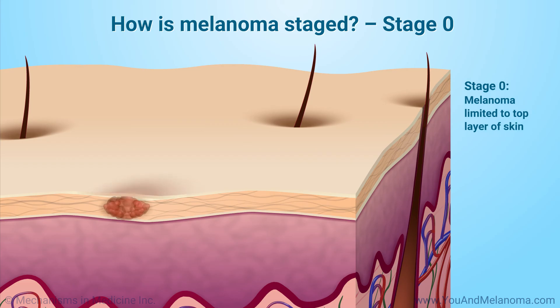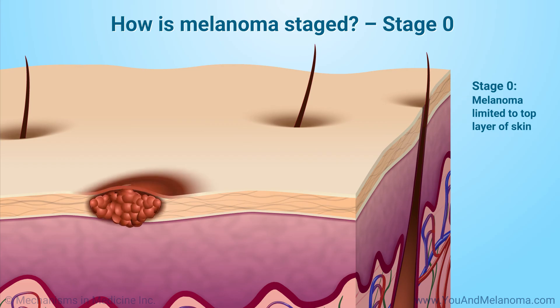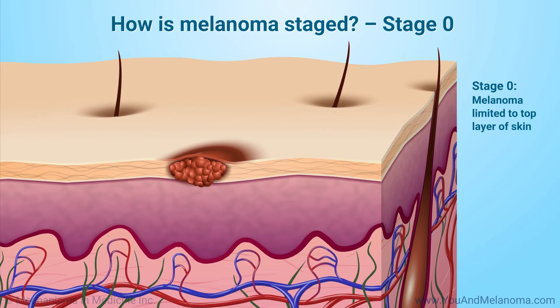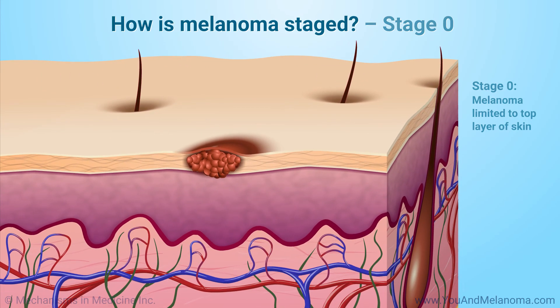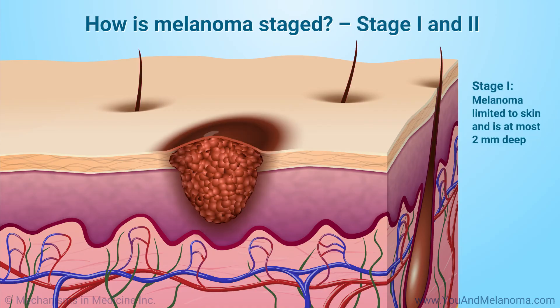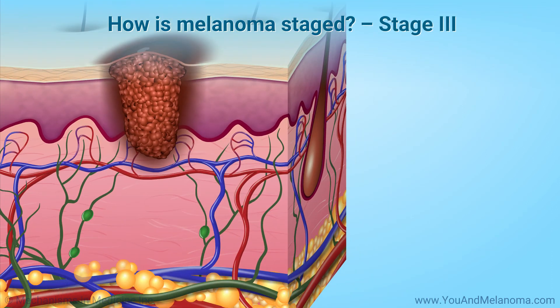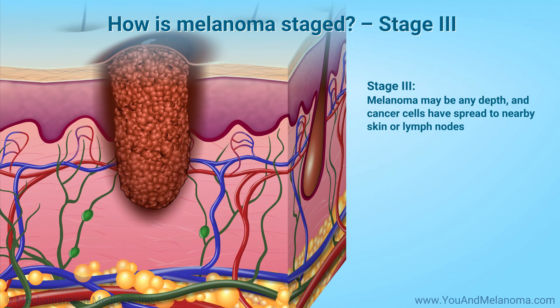Stage 0 melanoma is limited to the top layer of the skin, also known as melanoma in situ. The chance that it will spread is extremely low. Stage 1 melanoma is limited to the skin and is at most 2 mm deep. Stage 2 melanoma is limited to the skin and is more than 2 mm deep.